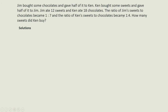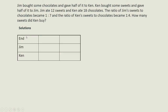We are given the final ratio and we want to find the starting number of sweets Ken bought. So we can draw a table — this is the end, and we are working backwards. The columns are sweets and chocolates. For Jim at the end, the ratio is 1 to 7, so I write 1 unit to 7 units.